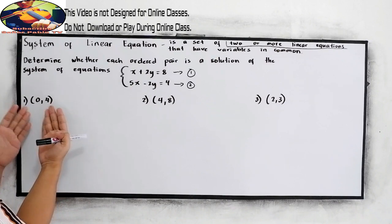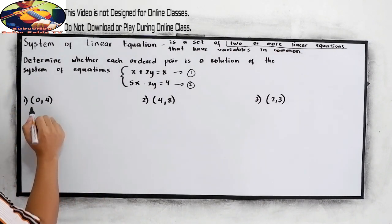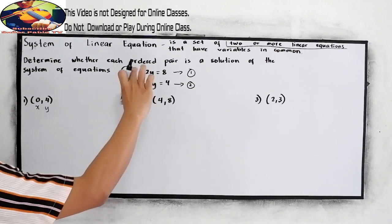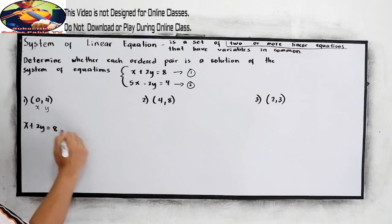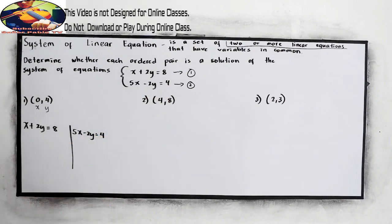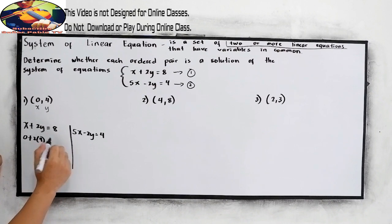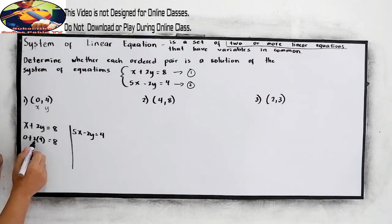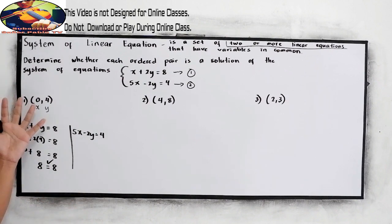Given the point (0, 4), this is our x and our y. Substituting into equation 1: x plus 2y equals 8 becomes 0 plus 2 times 4 equals 8. So 0 plus 8 equals 8 — they are equal. That means equation 1 is satisfied for this point.